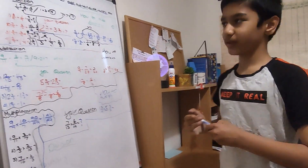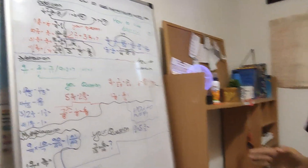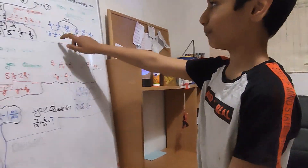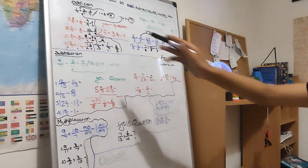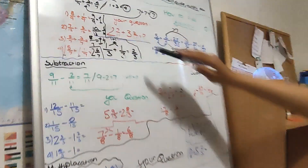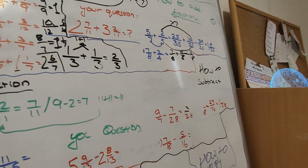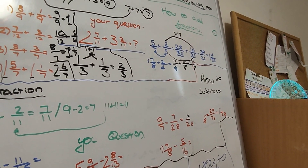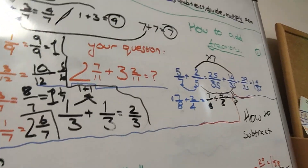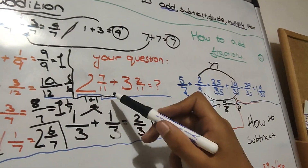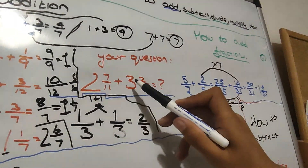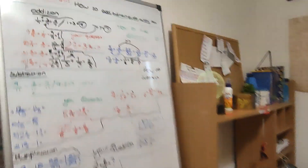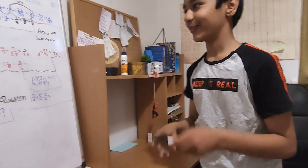This is a little bit complicated, but if you go to your study books it will be easier. Here's your question — you guys can solve it and put it in the comments down below: 2 whole and 7/11 add 3 whole and 2/11 is equal to what?